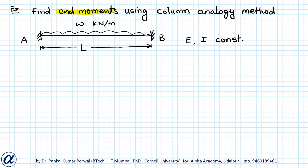In this question we want to find n moments using the column analogy method. We are given that the beam has ends A and B fixed, with an imposed UDL of w kilonewton per meter, and E and I for the beam are constant. Because both ends are fixed, the n moments will be equal to fixed end moments.